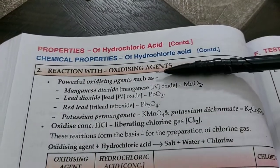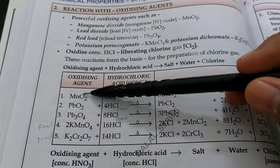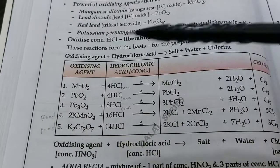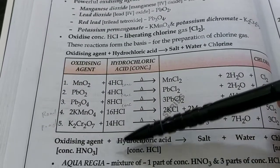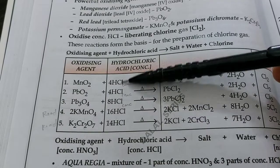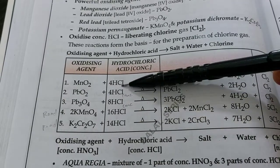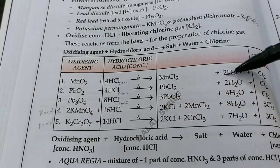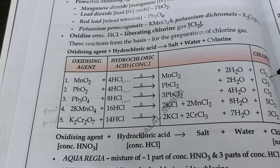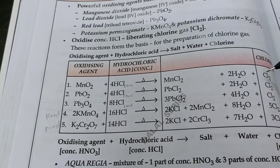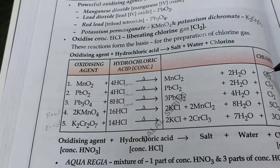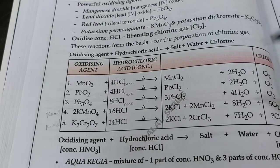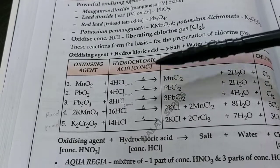When reacting with oxidizing agents, conc. HCl is used. In all these reactions, conc. HCl reacts with oxidizing agents to give salt, water, and chlorine gas — a greenish yellow gas that turns moist starch iodide paper blue-black, proving it is chlorine. This confirms that HCl contains chlorine.